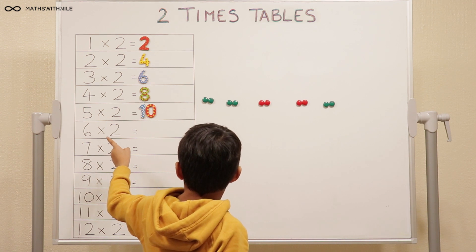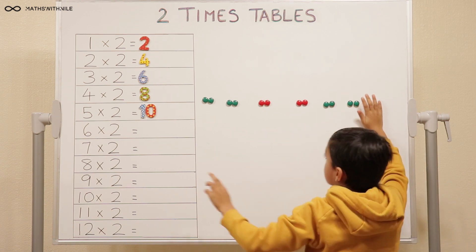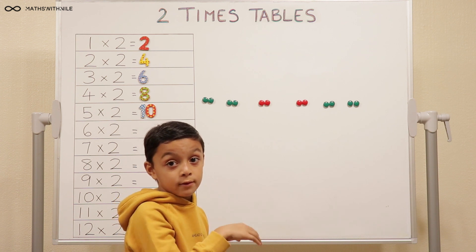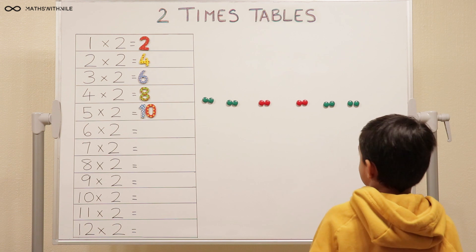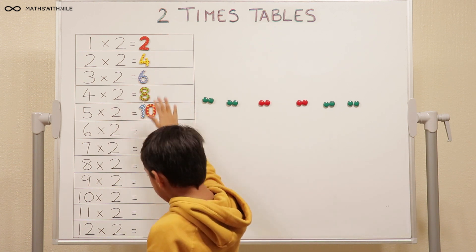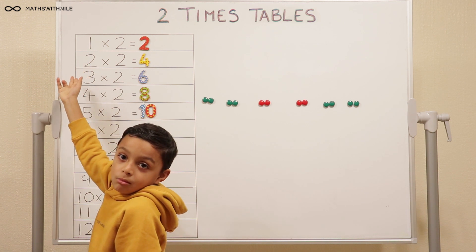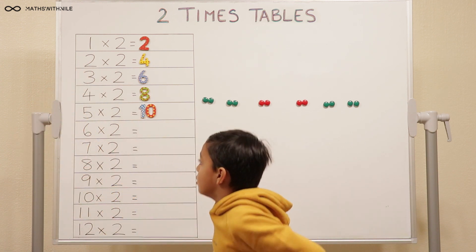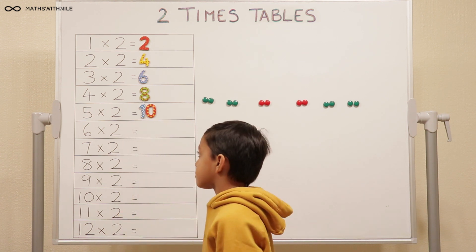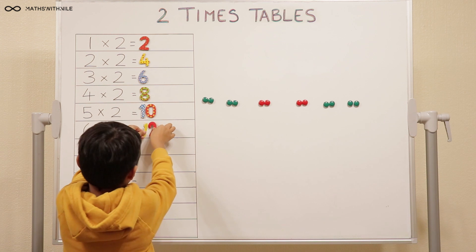And then six times two. Count in twos: two, four, six, eight, ten, twelve. Basically, all of this is commutative. What is commutative? All these questions are commutative. So look — one times two is the same as two times one. For example, five times two is the same as two times five. That might make it easier sometimes. So six times two equals twelve — put your twelve up.